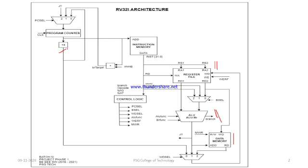There is no dedicated decoding unit in this architecture because each instruction is fitted into fixed fields, so by connecting those fields to the corresponding ports, decoding happens implicitly. We don't have a separate decoding unit.